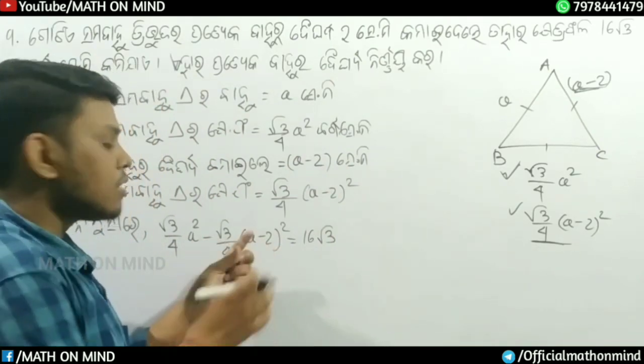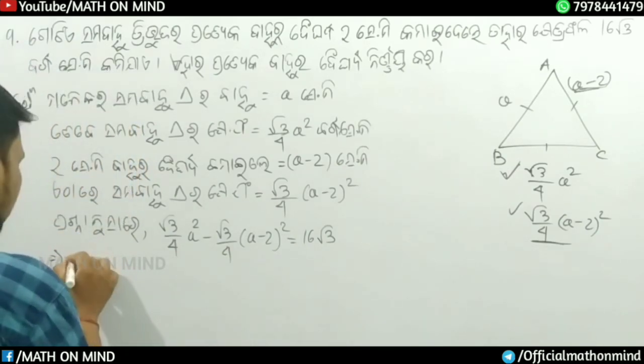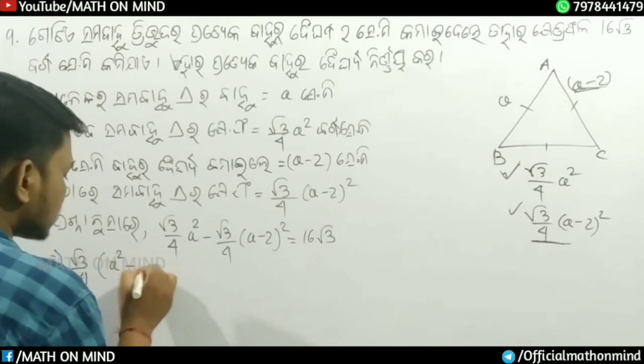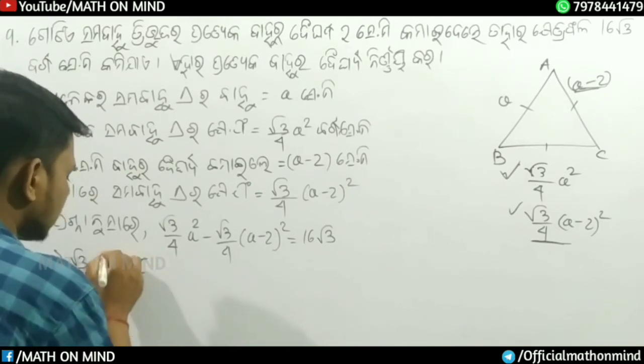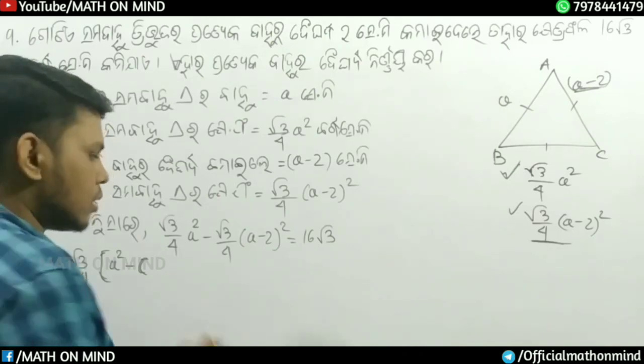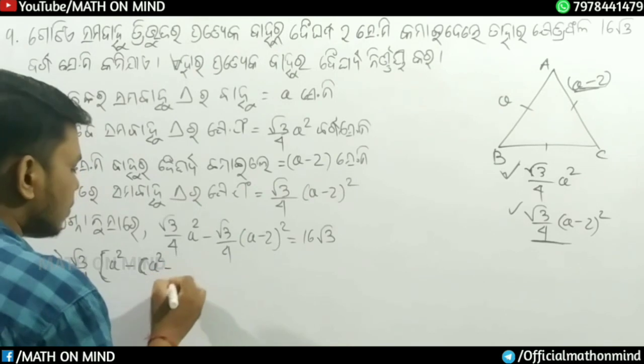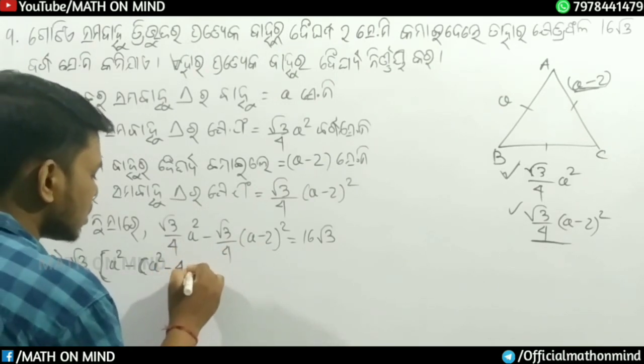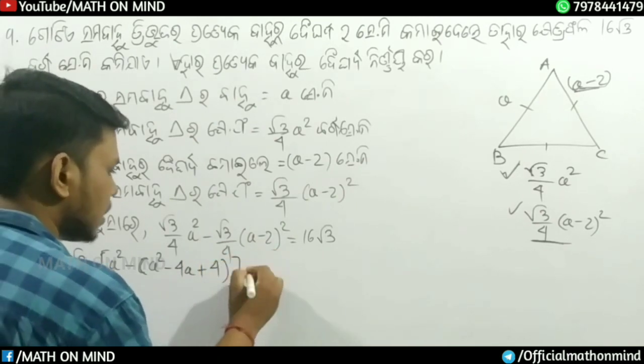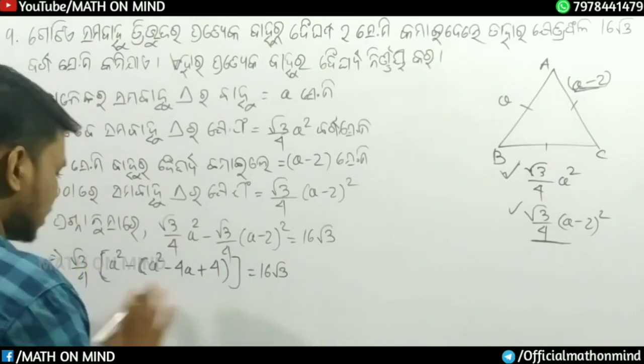Taking root 3 by 4 common from the left side: root 3 by 4 into bracket a squared. Opening the bracket for a minus 2 whole square gives us a squared minus 4a plus 4 equals 16 root 3. Multiplying both sides: root 3 into 16 equals 16 root 3.